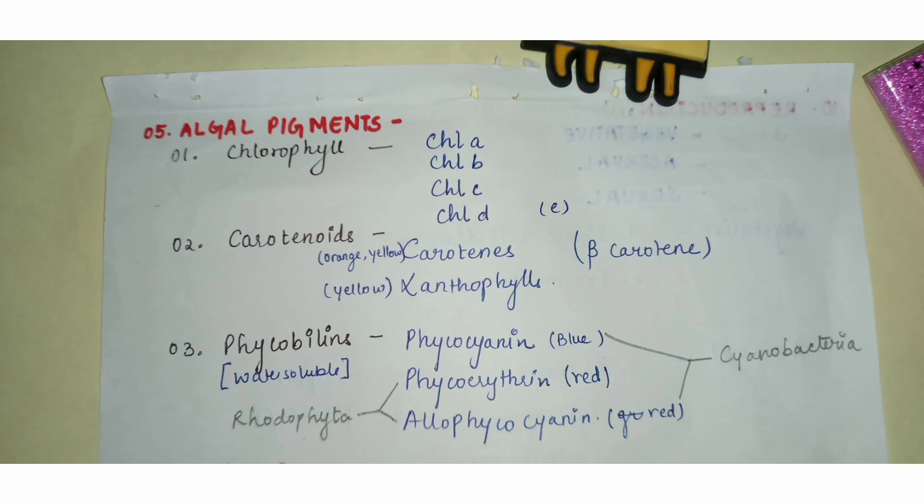The second pigment group is carotenoids, which comprise two pigments: carotene and xanthophyll. These are responsible for yellow to orange coloration. Among carotenes, beta-carotene is very important and is majorly found throughout the plant kingdom.